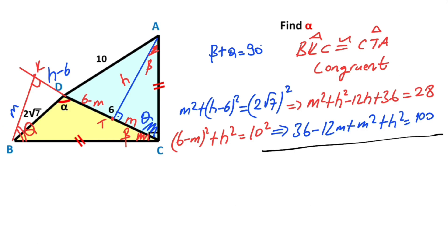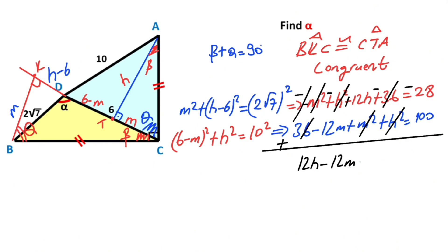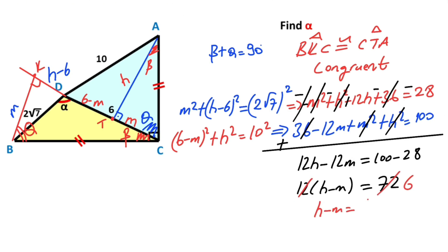Therefore, if we multiply the first equation by minus one, notice that the signs of those terms will change. After that, if we add these two equations together, the m squared terms cancel, the h squared terms cancel, and those terms also cancel. So 12h minus 12m equals 100 minus 28. So 12 times (h minus m) equals 72, meaning h minus m equals 6.